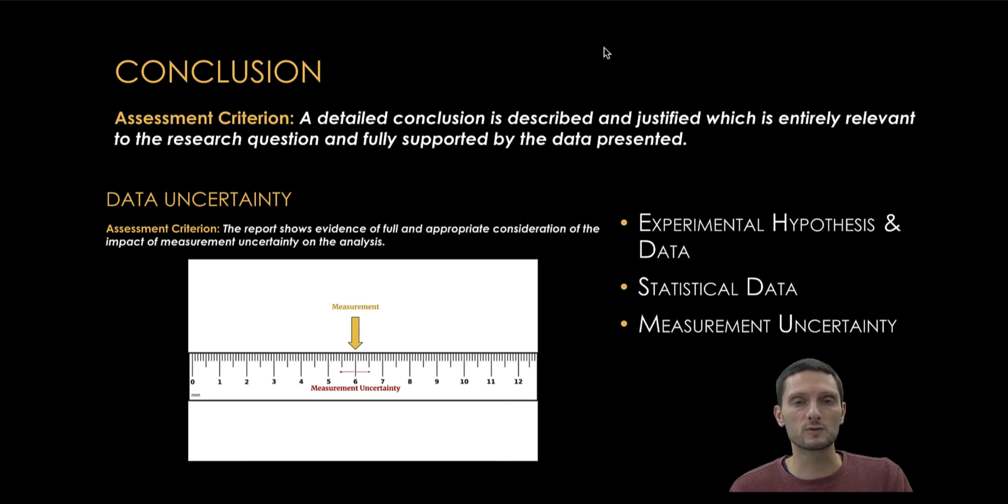This is even more so for an analog measurement like using a ruler versus a digital measurement like using a digital scale. In the conclusion, after discussing the statistical data, you need to present the measurement uncertainty for any measurements that are conducted during the experiment and discuss whether or not those measurement uncertainties could affect the precision of the data that's collected.